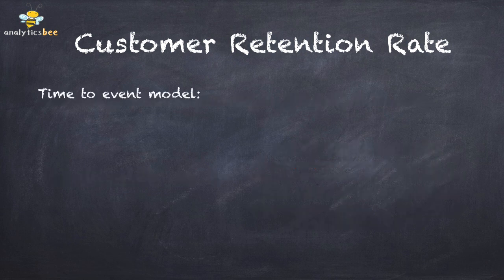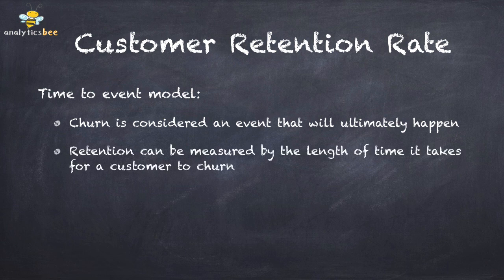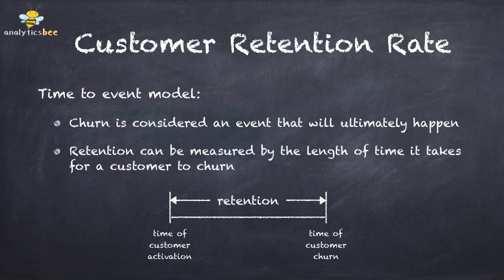A type of statistical model known as the time-to-event model is particularly suitable for studying customer retention. Churn is considered an event that will ultimately happen for any given customer. So retention can be measured by the length of time it takes for a customer to churn. In the following schematic diagram, retention is the time interval between the time of customer activation and the time of customer churn.